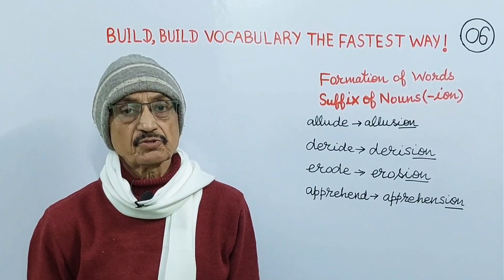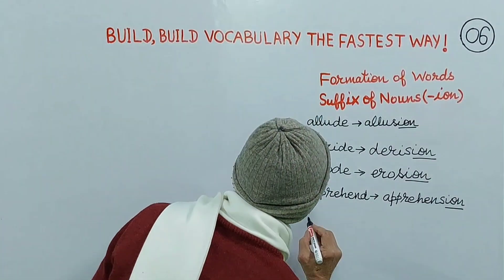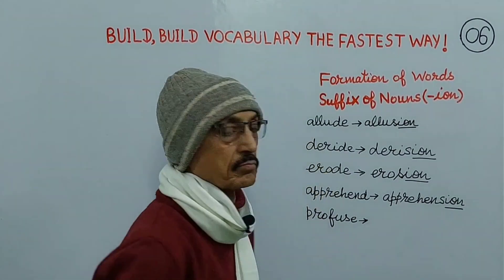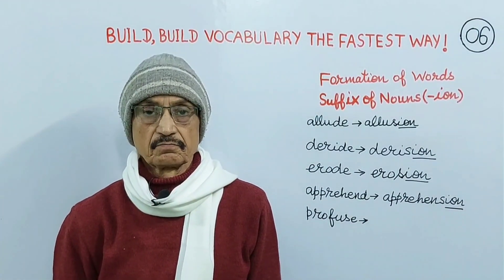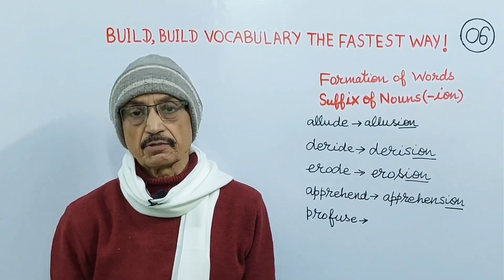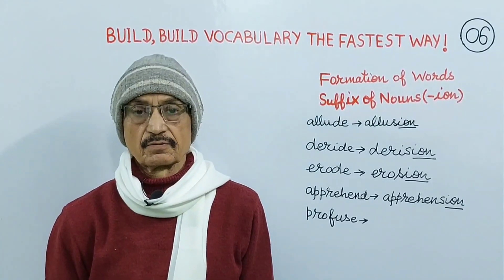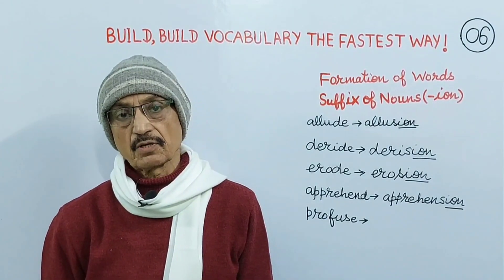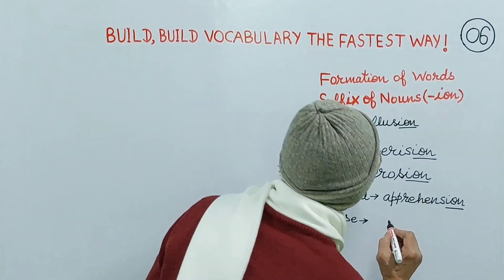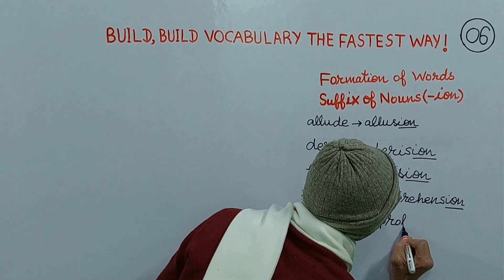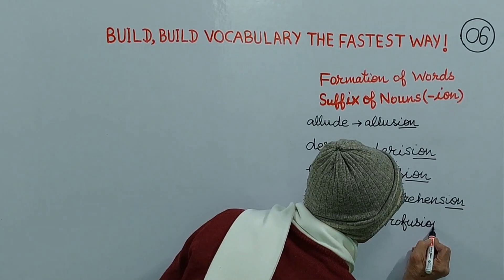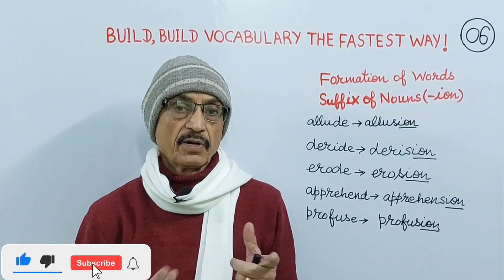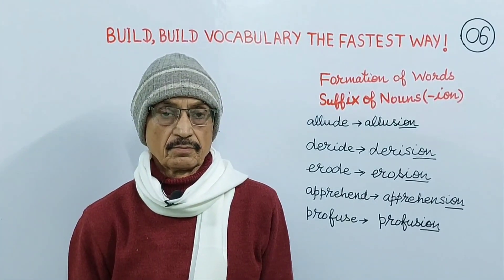Next comes profuse. Profuse is an adjective meaning bountiful, gushing, galore, copious. When we add suffix I-O-N to it, it changes into its noun — profusion. Profusion means a considerable amount, plenty, plentitude, myriad.